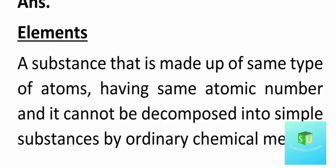And it cannot be decomposed into simpler substances by ordinary chemical means. This is your book's definition. According to this definition, an element is a substance made of one type of atom. The atomic number of atoms is the same — atomic number means the number of protons, which is equal to the number of electrons.